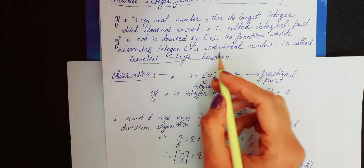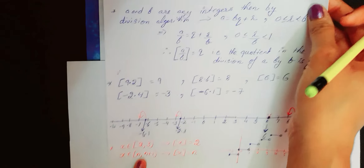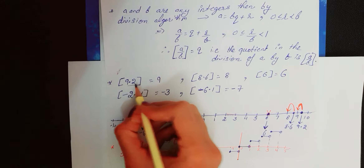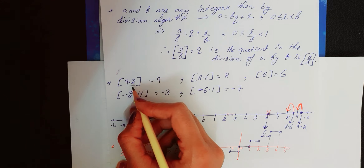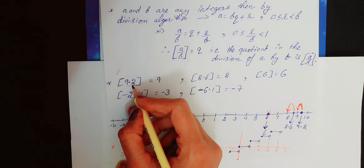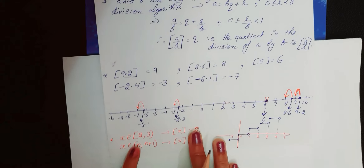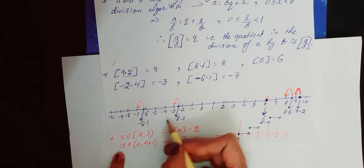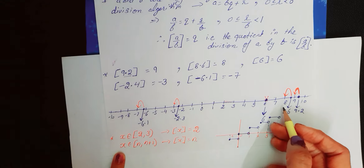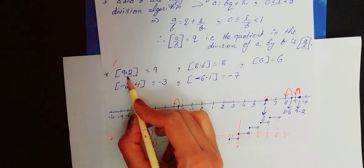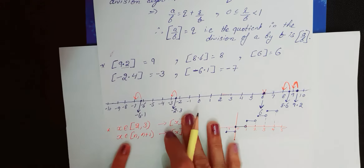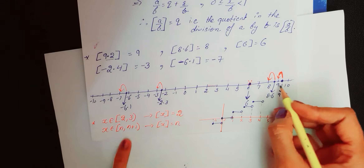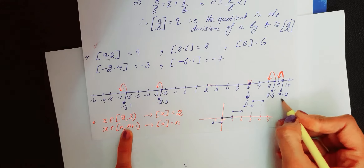Toh yeh thi definition. Definition ko hum acche se samajhne ke liye kuch examples consider karte hain. Suppose humein ek real number diya gaya hai 9.2 aur humein calculate karna hai is 9.2 ka greatest integer function. Greatest integer function find out karne ke liye sabse accha tarika hai ki hum number line consider karein aur jo bhi number hai use number line pe locate karein. Jaise abhi hamare paas 9.2 hai — number line pe dekhen toh kahin yahan lie karta hai.